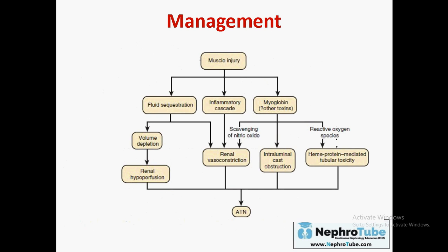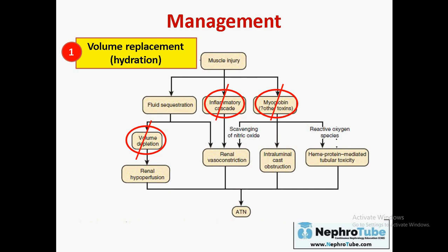The management of rhabdomyolysis depends on the pathogenesis and pathophysiology. We must break the cycle causing acute tubular necrosis by addressing the three main pathways: volume depletion, inflammatory cascade, and myoglobin. We start with volume replacement and hydration, which corrects volume, dilutes inflammatory mediators, and washes out myoglobin from the tubules.